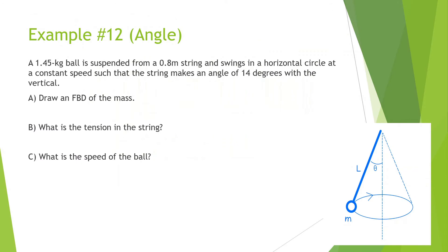So let's look at Example number 12. A 1.45 kg ball is suspended from a 0.8 meter string and swings in a horizontal circle at a constant speed such that the string makes an angle of 14 degrees with the vertical.